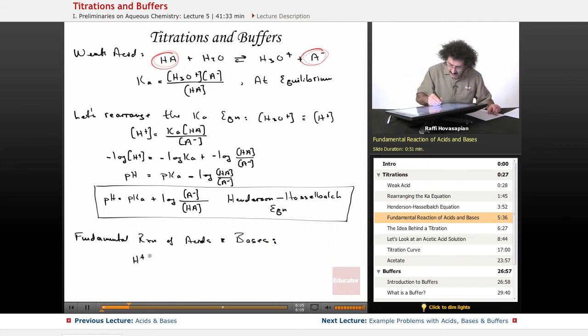Anytime you put an acid together with a base, essentially what you're doing is you're putting an H+ near an OH-. Anytime an H+ and an OH- are near each other, they're going to form water. This is the fundamental reaction. This will always happen. This is the idea behind a titration.